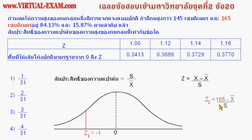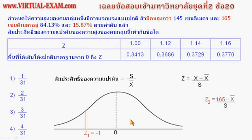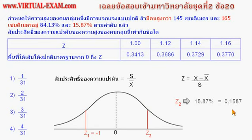แปลงความสูง 165 cm ให้เป็นค่า Z โดยแทน X ด้วย 165 ลงไปในสูตร ได้ค่ามาเป็น Z2 ซึ่งควรอยู่ทางขวาของ Z1 เพราะ 165 มากกว่า 145 โจทย์กำหนดให้จำนวนคนที่สูงกว่า 165 cm มีอยู่ 15.87% ซึ่ง 15.87% น้อยกว่า 50% ดังนั้นค่า Z2 จะต้องมากกว่า 0 พื้นที่ที่อยู่ทางขวาของ Z2 คือ 0.1587